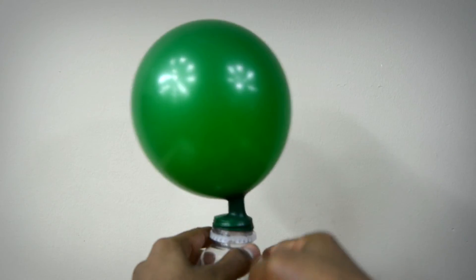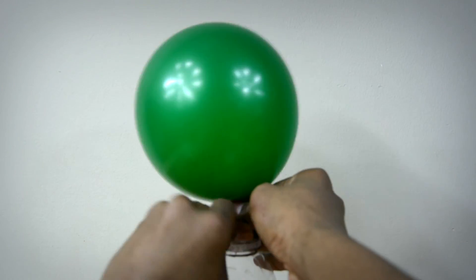So when you're trying to take your balloon off the bottle just do it as carefully as possible as you don't want too much of the air to escape.